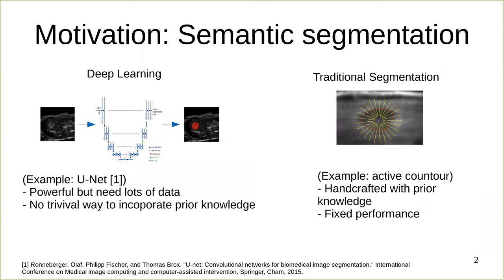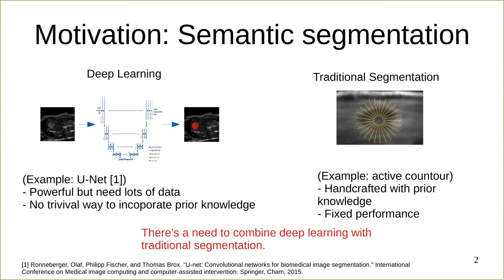However, CNN still lacks any mechanism to incorporate prior knowledge. On the other hand, we have traditional segmentation algorithms. These are usually handcrafted with prior knowledge in mind. Therefore, we need to combine CNN with traditional segmentation so that the latter can directly incorporate adequate prior knowledge when we have a limited amount of data.